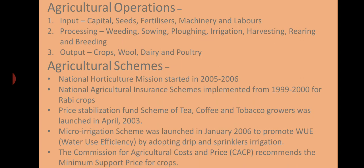Several schemes were also started to bring betterment in agriculture: the National Horticulture Mission started in 2005–2006; the National Agriculture Insurance Scheme implemented in 1999–2000, especially for rabi crops; the Price Stabilization Fund Scheme for tea, coffee and tobacco growers launched in April 2003; and the Micro Irrigation Scheme launched in January 2006 for arid areas, focusing on promoting water use efficiency through drip or sprinkler irrigation. The Commission for Agricultural Cost and Price also plays a role.